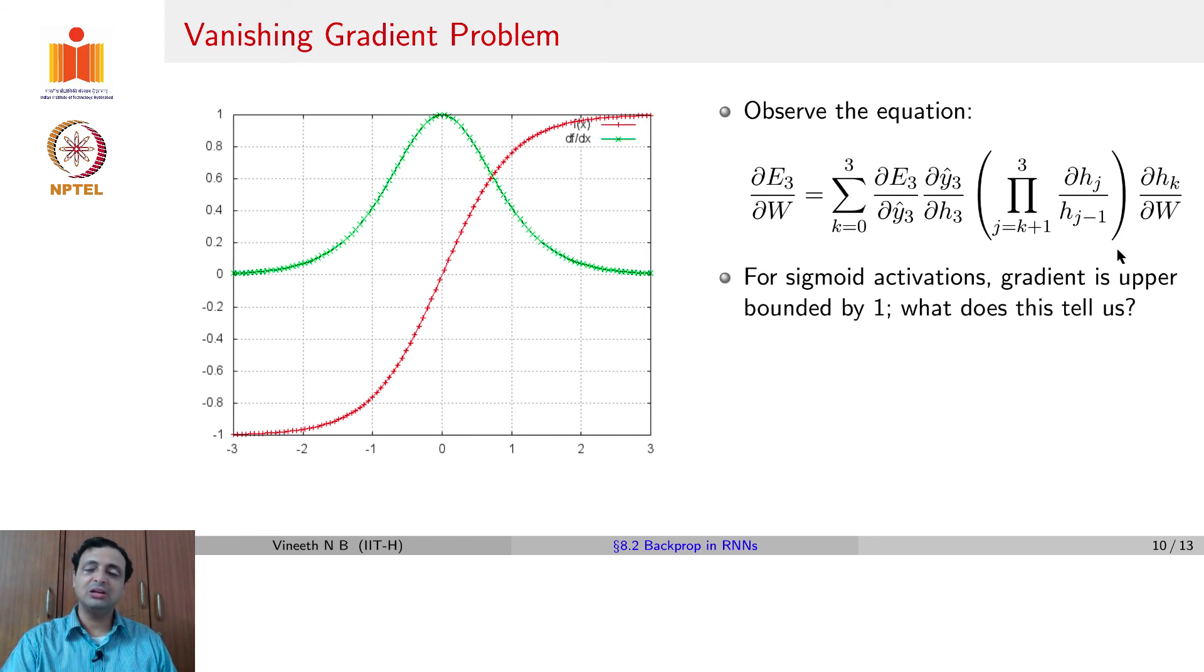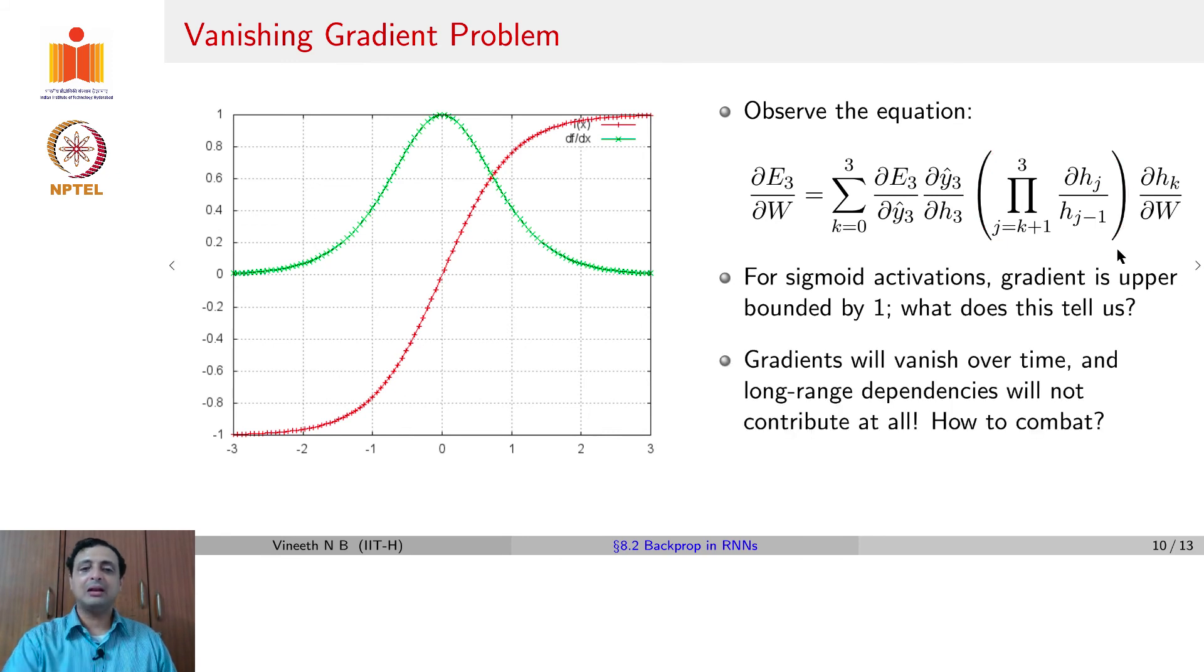So the gradient of the sigmoid activation function, it is also upper bounded by 1, which means all these terms will have gradients which are upper bounded by 1. And what does that tell us? It means that the gradients in this particular computation, ∂E_3/∂W will quickly vanish over time. And an earlier time step, the weights or the impact of an earlier time step may never be felt on a later time step. Because the gradients that you get due to an earlier time step, it is most likely will become 0 because of this product over a long range of activations across many time steps.